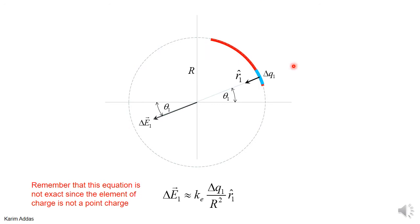To illustrate the idea, we're going to cut up this arc into four parts. Remember that if we use the equation for a point charge for each element of charge, it's only an approximation — it's not exact because this is not a point charge; this is a large piece of arc. We're using this equation as an approximation just to give the quantitative aspect of the problem.